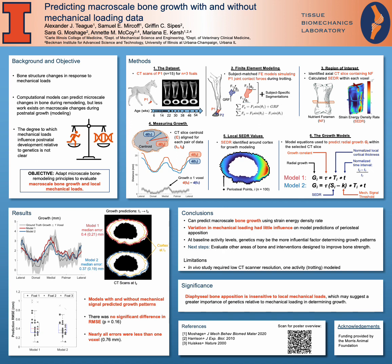Looking at these results in aggregate, the RMSE for both prediction models is around 0.4 millimeters, and there was no statistically significant difference between these prediction approaches. Moreover, the median errors for both approaches were well within the spatial resolution of our CT scanner at 0.76 millimeters.